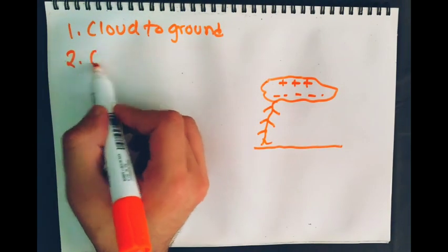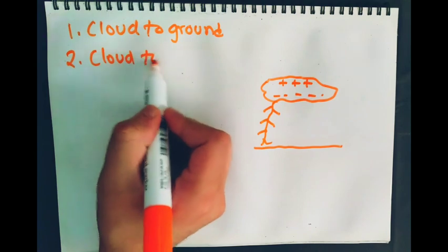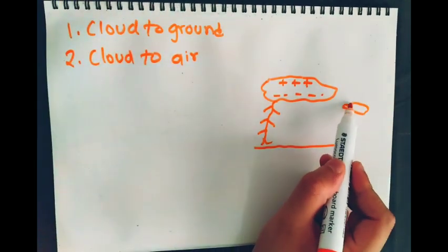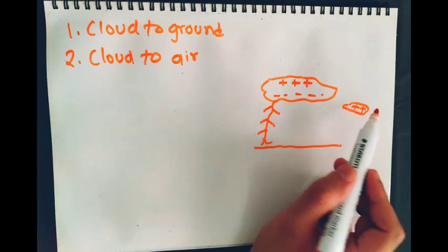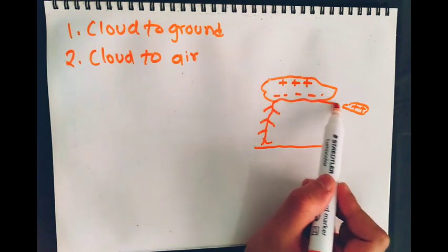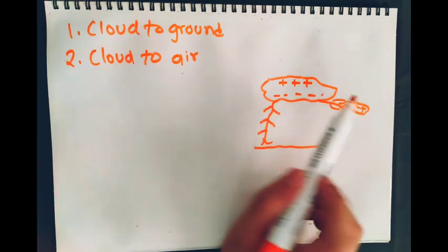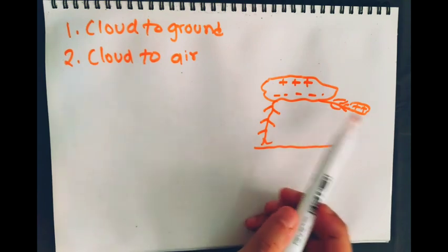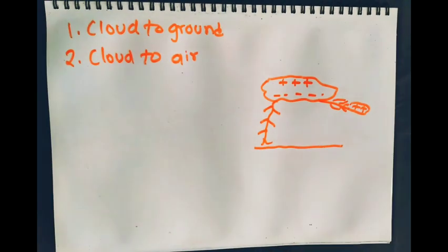Second type is cloud to air. It can happen that some pockets of air get created which accumulate certain type of charge, and the discharge just occurs from this cloud to that part of air. So it starts from a cloud and ends up in some area of the sky or atmosphere.